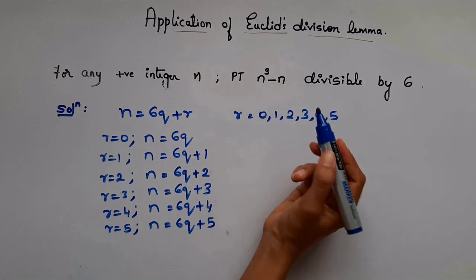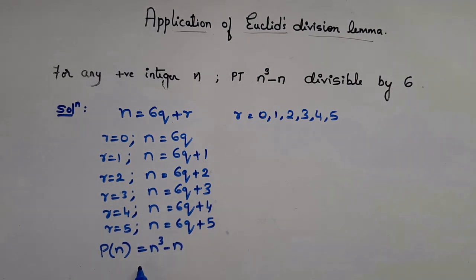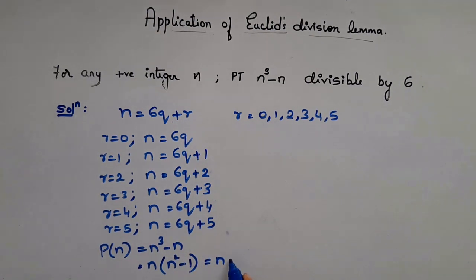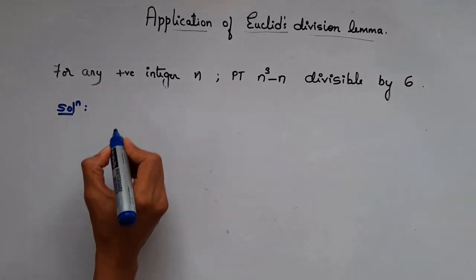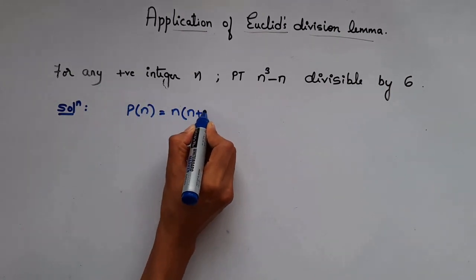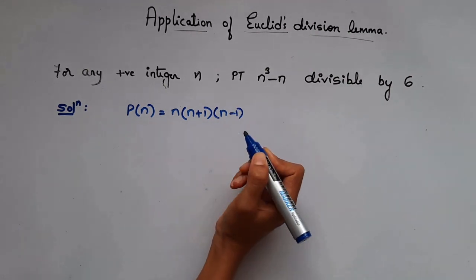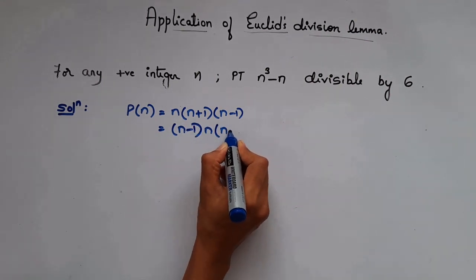Since we have to prove n³ - n is divisible by 6, let P(n) = n³ - n. Here n is common, so take n outside: n(n² - 1). This equals n(n+1)(n-1) using the identity a² - b² = (a+b)(a-b). We can rearrange this in ascending order as (n-1)·n·(n+1). Now let's put the different values of n into this equation.